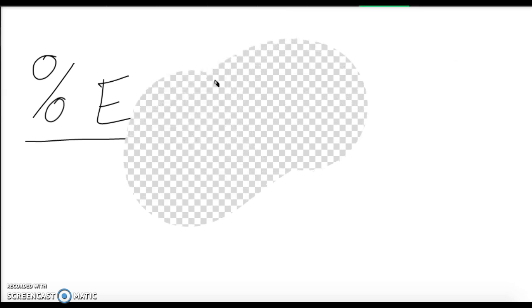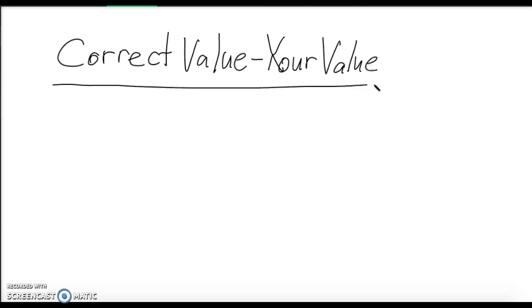I don't know why I put a definition. We're not defining it. All right. So your percent error is your correct value minus your value divided by the correct value, and then that whole thing times 100.